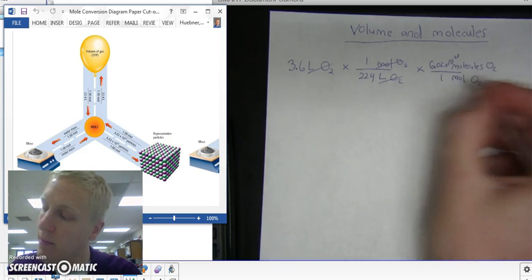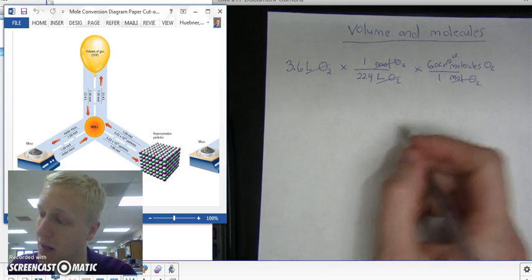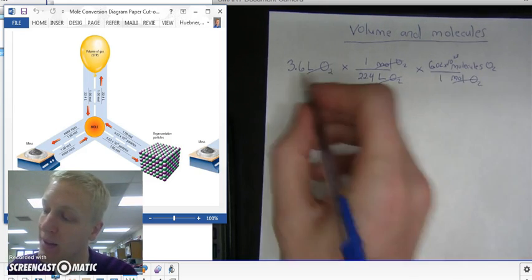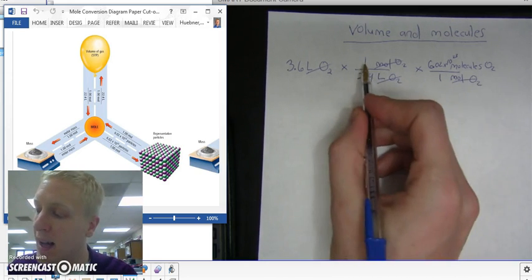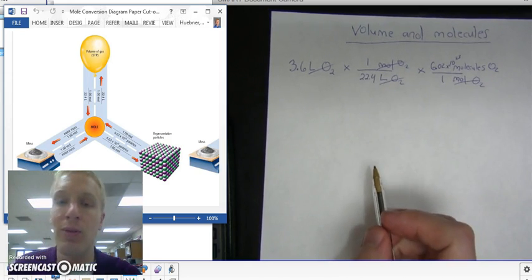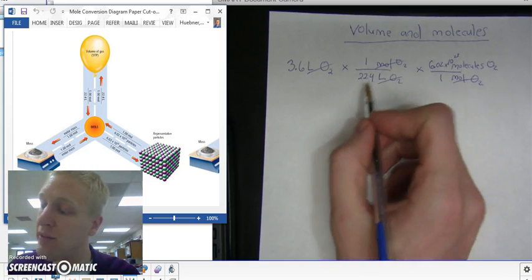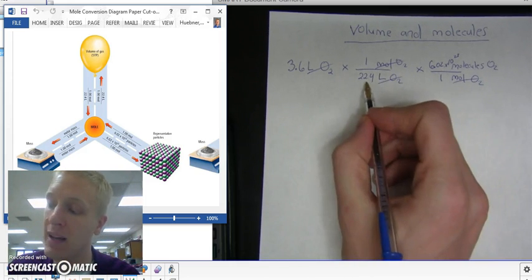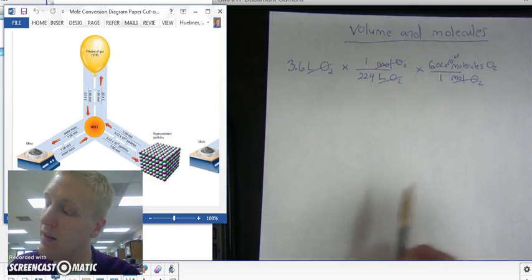Once I'm here, moles cancels out, and I'm left with molecules as my units. I'm going to take my 3.6 and multiply by everything that's on the top, times 1, times 6.02, times 10 to the 23rd. I'm going to divide by everything that's on the bottom, divided by 22.4 liters, divided by 1.